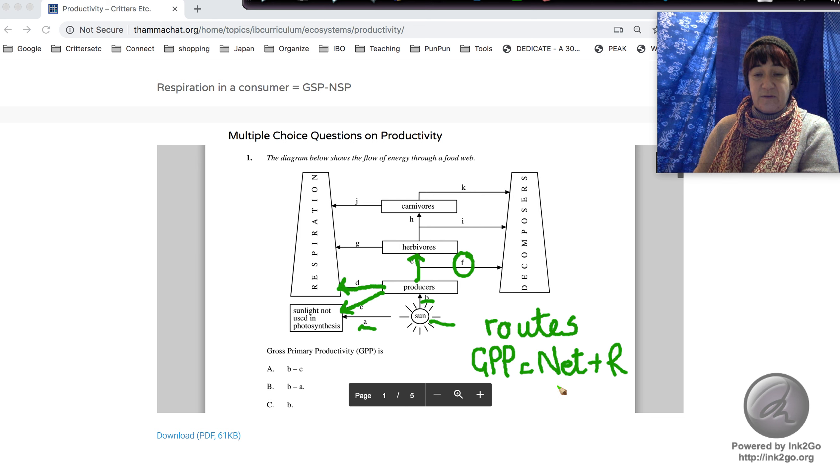That equals the net productivity, the amount in the bank account, and the losses to respiration, the amount that it pays in taxes. So gross primary productivity is the amount being produced, but it doesn't include the sunlight that it never uses.